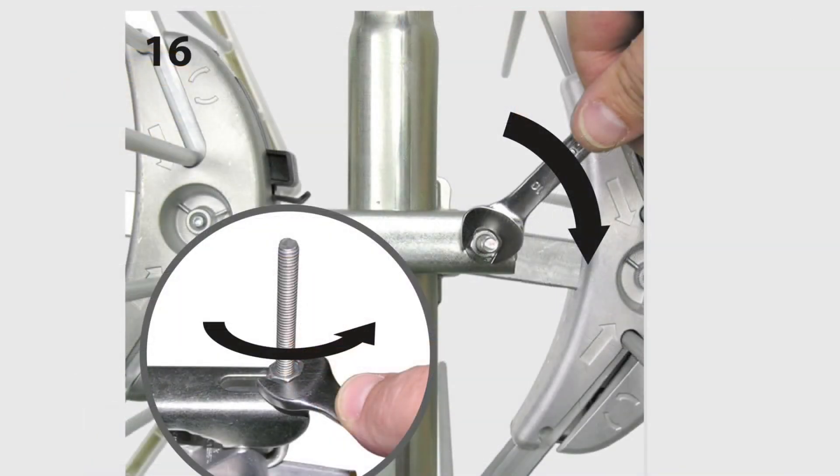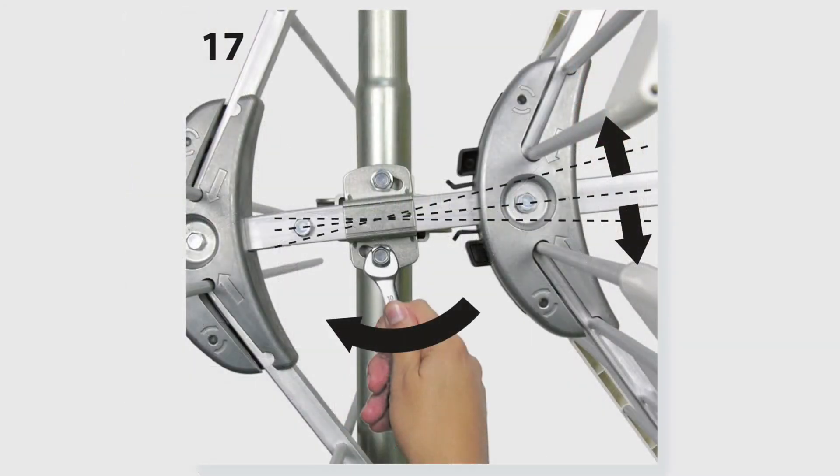It's at this point that they actually have you attached to the mast. You slide everything over and tighten it up with a 10mm wrench. Then, adjust the tilt of the antenna so it's perfectly level.